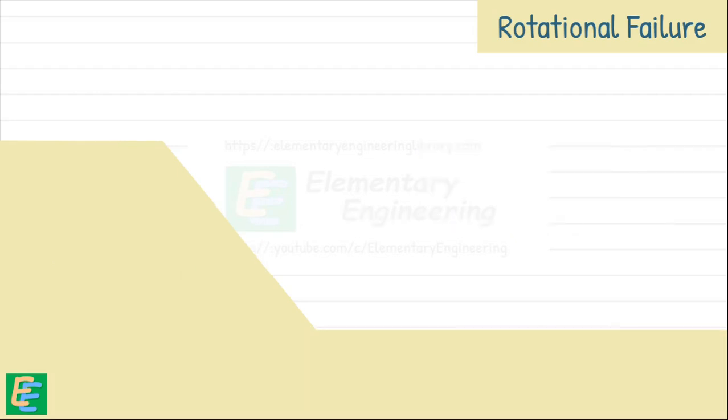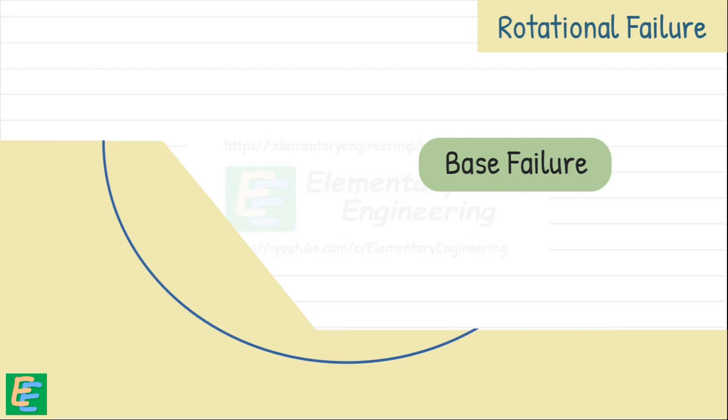Third category of rotational failure is base failure. In this case the failure surface dips below the toe of the slope. This usually happens when there is a weak layer of soil or rock underneath causing the entire slope to collapse from the bottom up.